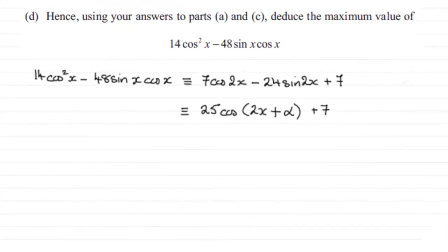Hi, in the last part of this question it says hence using your answers to parts a and c, deduce the maximum value of 14 cos squared x minus 48 sine x cos x. We can see I've started to write this out.